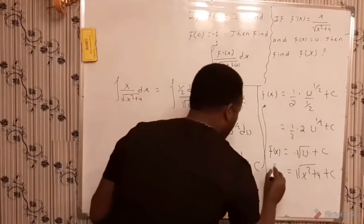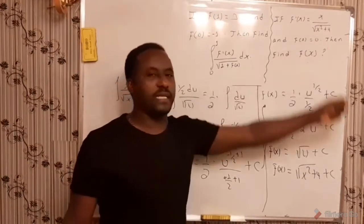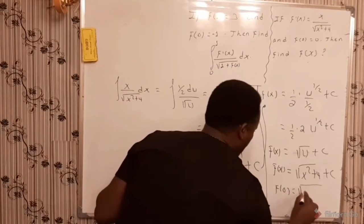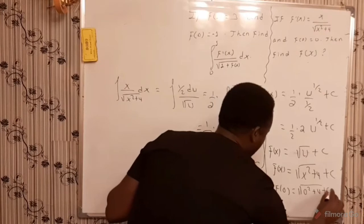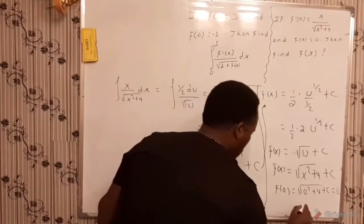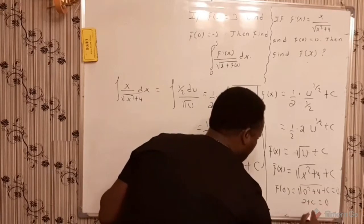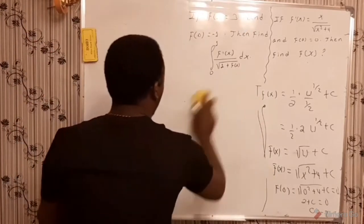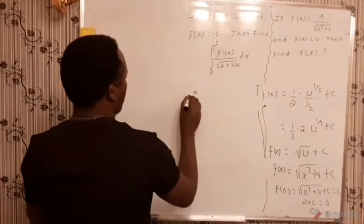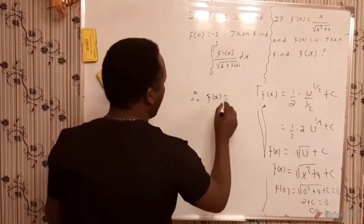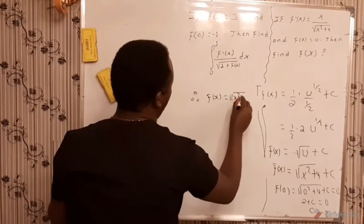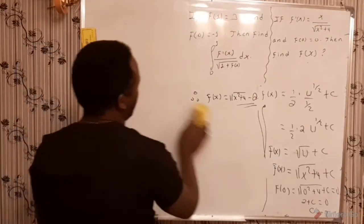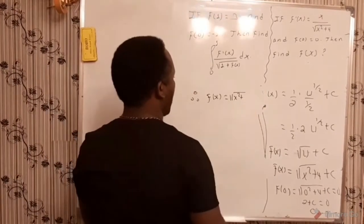Now to find the value of c, based on the given information, since f of 0 equals 0, we replace x with 0: f of 0 equals the square root of 0 squared plus 4 plus c equals 0. That is the square root of 4 plus c equals 0, so 2 plus c equals 0, and c equals minus 2. Therefore f of x equals the square root of x squared plus 4 minus 2. This is our function f of x.